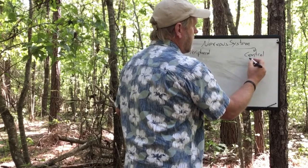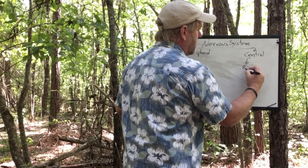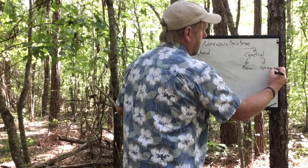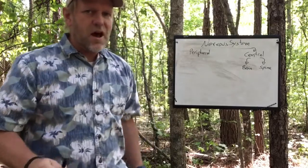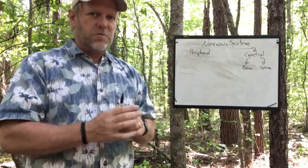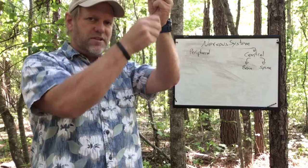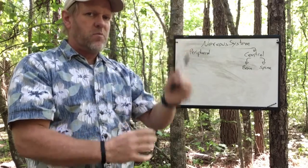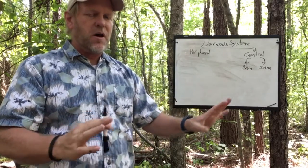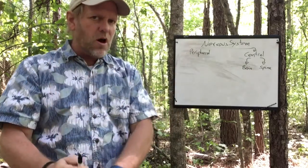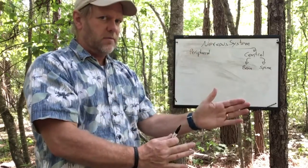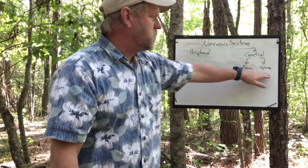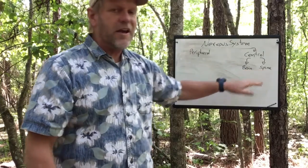The central nervous system is composed of two things: the brain and the spine. Remember, the spine is not the backbone — it's not the vertebrae. The spine is the nerve that runs down inside through the openings in the vertebrae; it's what your vertebrae protect. The vertebral column is different from the spine — the spine is a nerve.